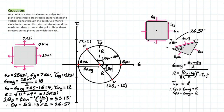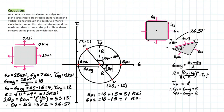Now let's solve for the principal normal stresses. Sigma p1 equals sigma average plus the radius, which is 16 plus 15 equals 31 ksi. Sigma p2 equals sigma average minus the radius, which is 16 minus 15 equals 1 ksi. Another unique thing about the in-plane shear stress is that the normal force acting on that plane lands exactly at sigma average. So sigma n equals sigma average, which equals 16 ksi.